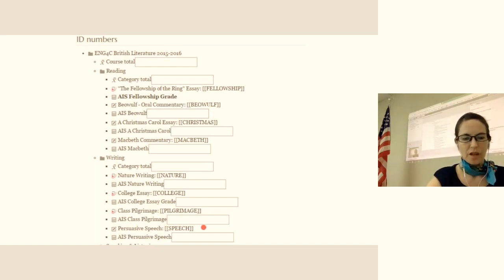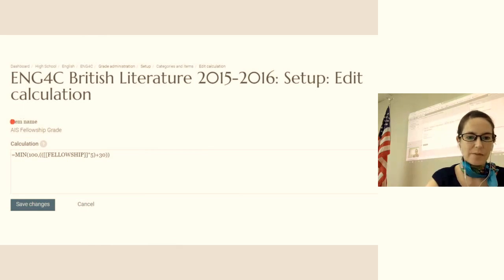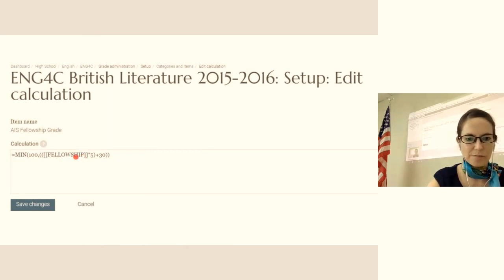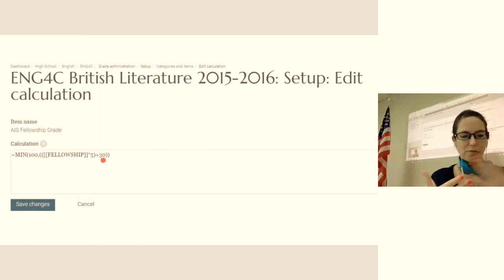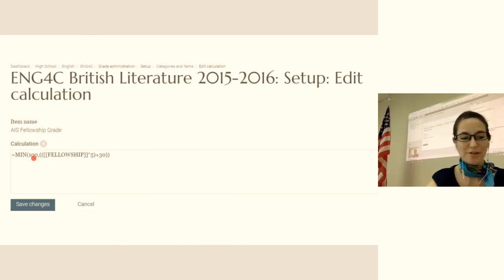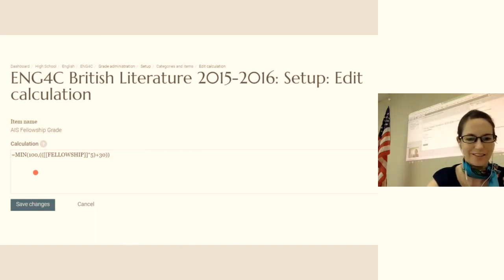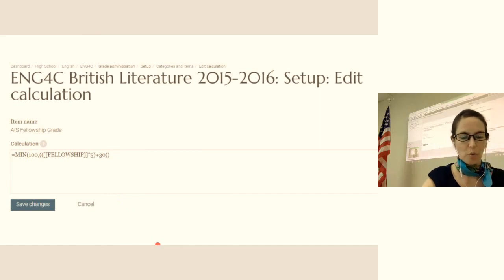So after we've created the ID number, we can then create the calculation. I've given this item the name AIS Grade. The calculation, which Andrew explained, is along here. You can see there 'fellowship' - that's the ID number. So it's telling grade book to grab that raw score, times it by 5 and plus 30, which will then create the percentage to put in the letter grade. The reason why it's min 100 here is so it doesn't go off the top of the graph and create 110%, for example. So it can't go above 100%. That's how we create the calculation and tell grade book what to do with that raw score.